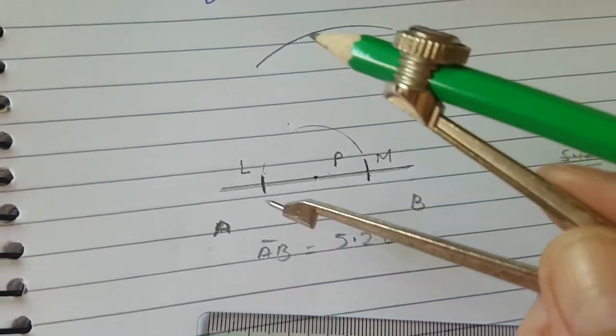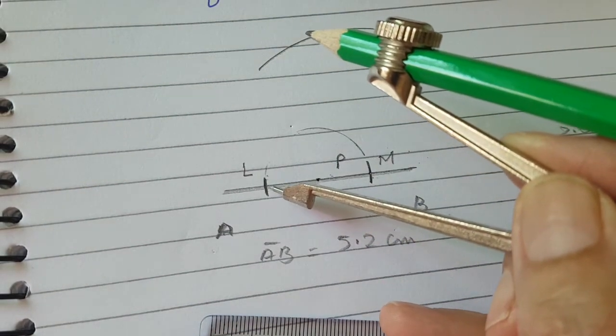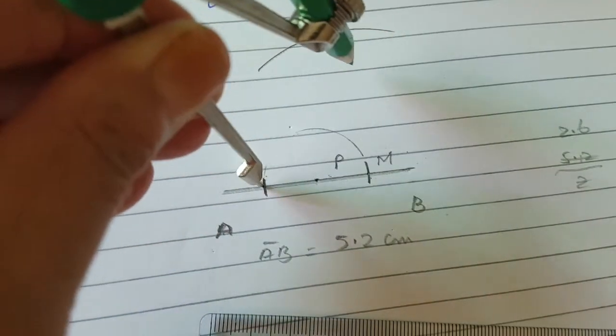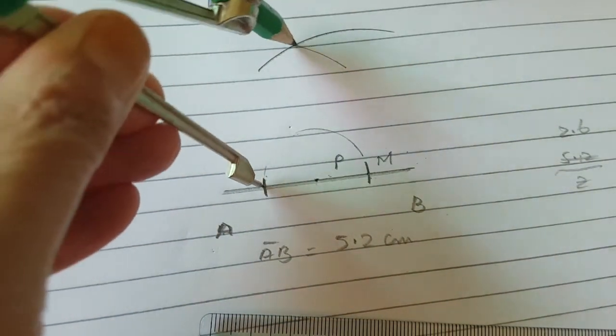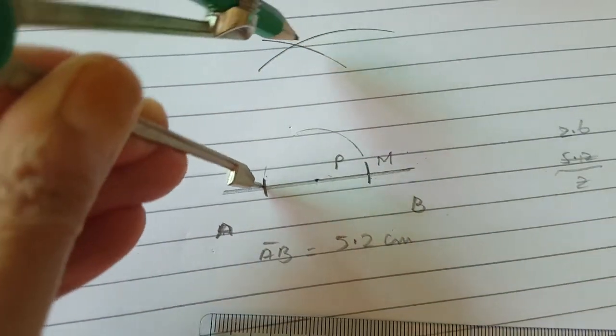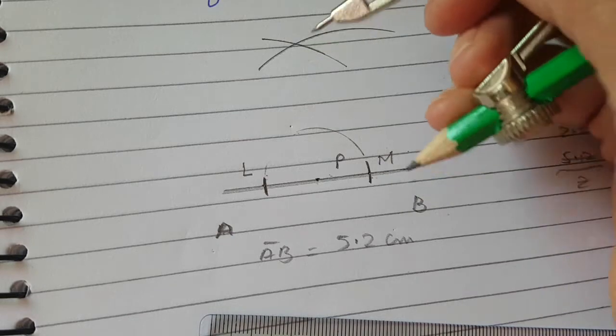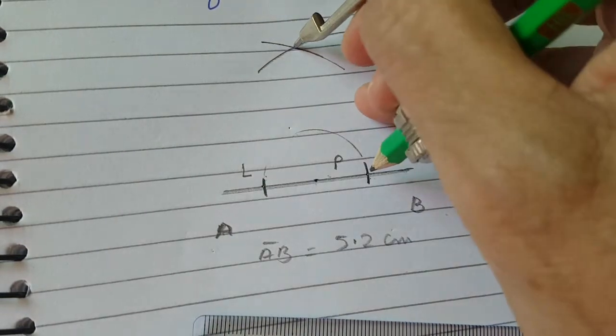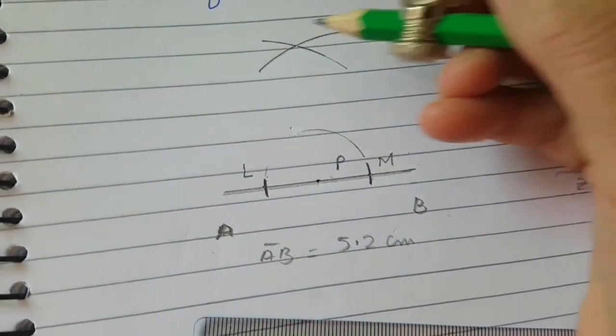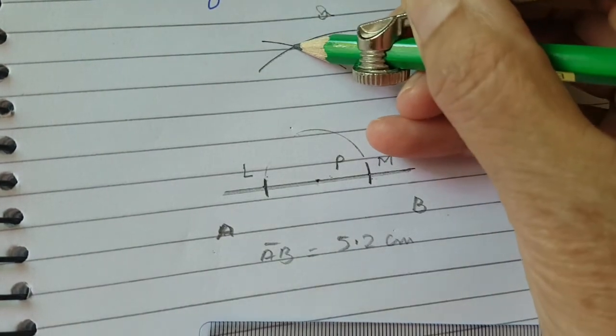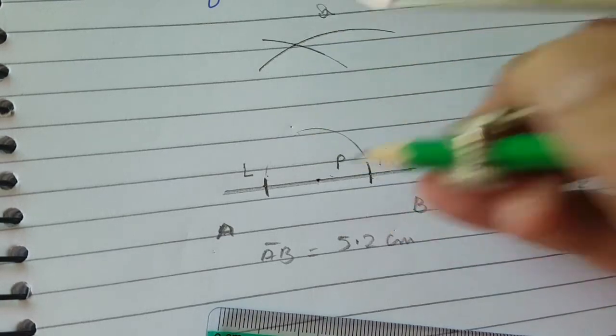With the same radius you will take L as your center and cut the previous arc at some point. Call it Q. Name this bisection point as Q.